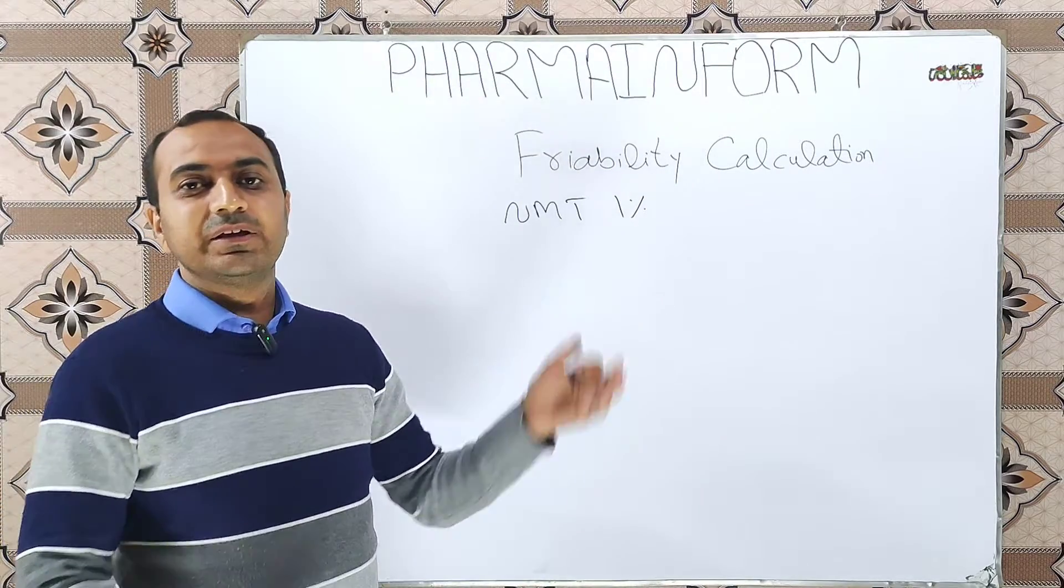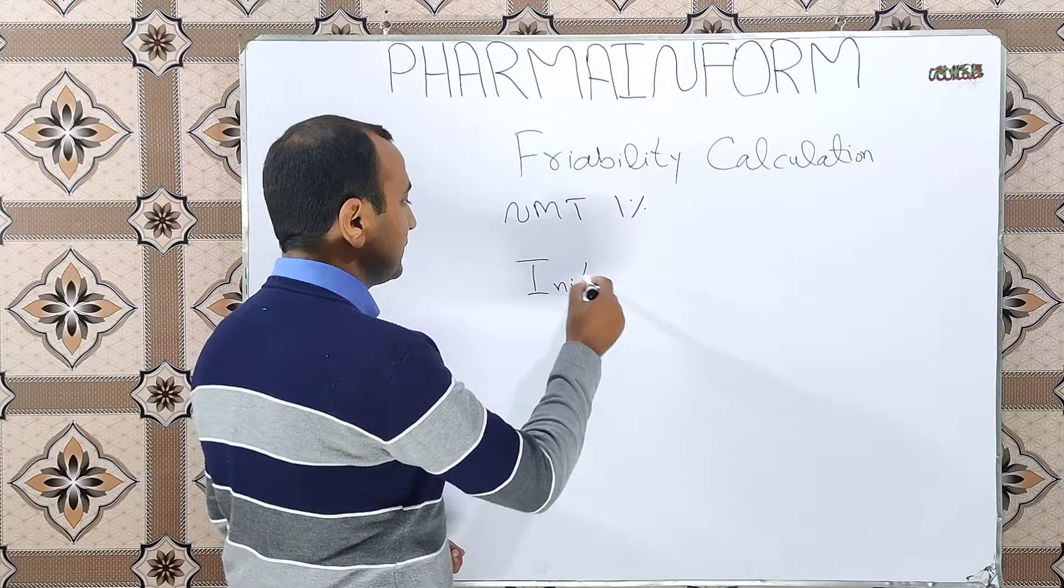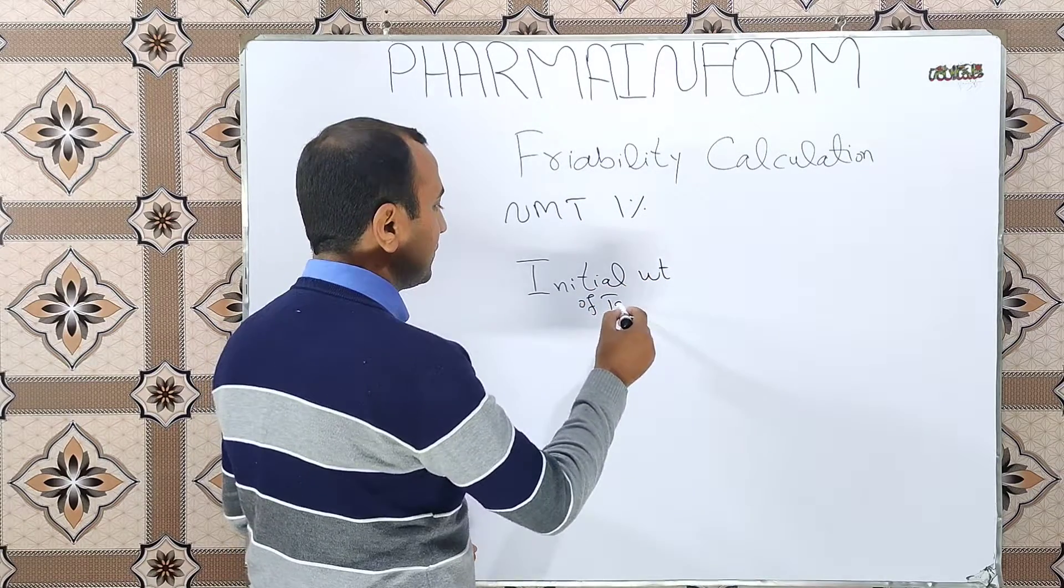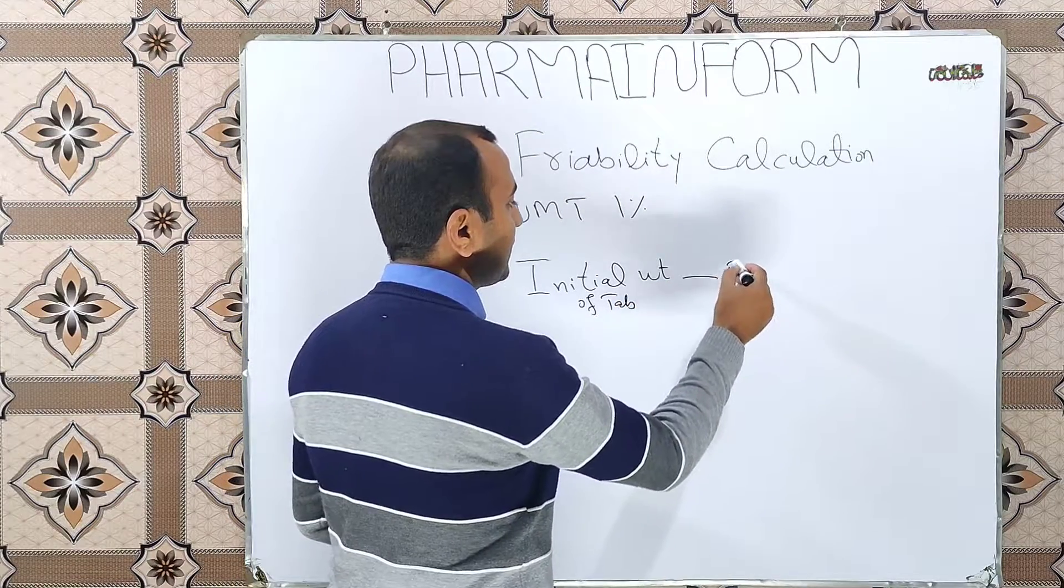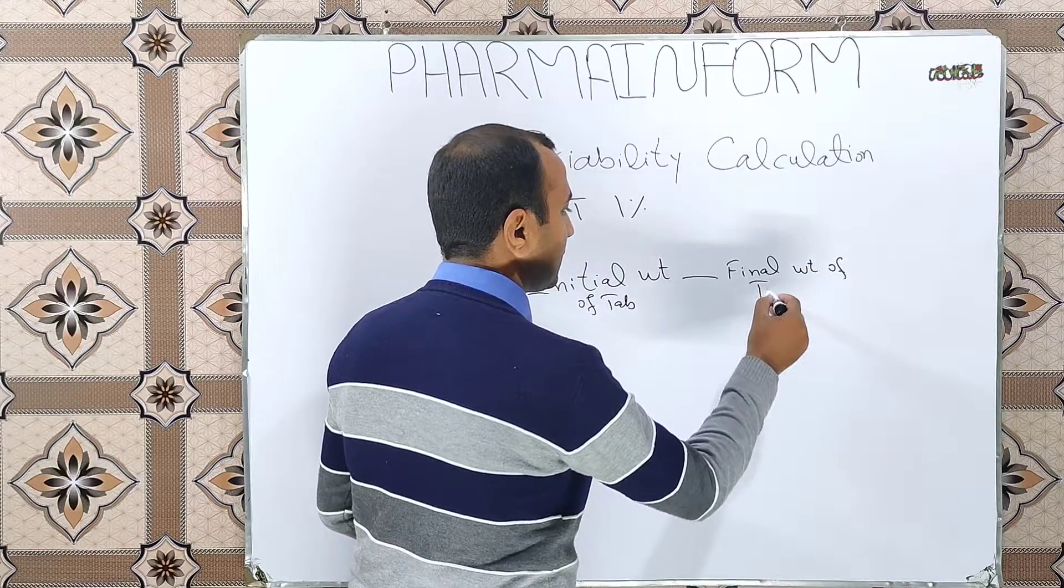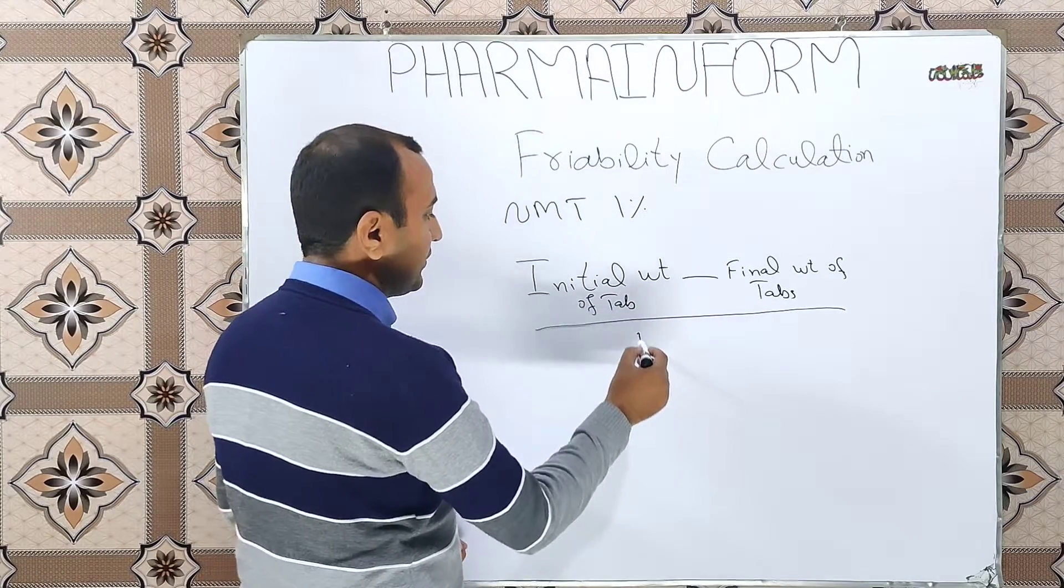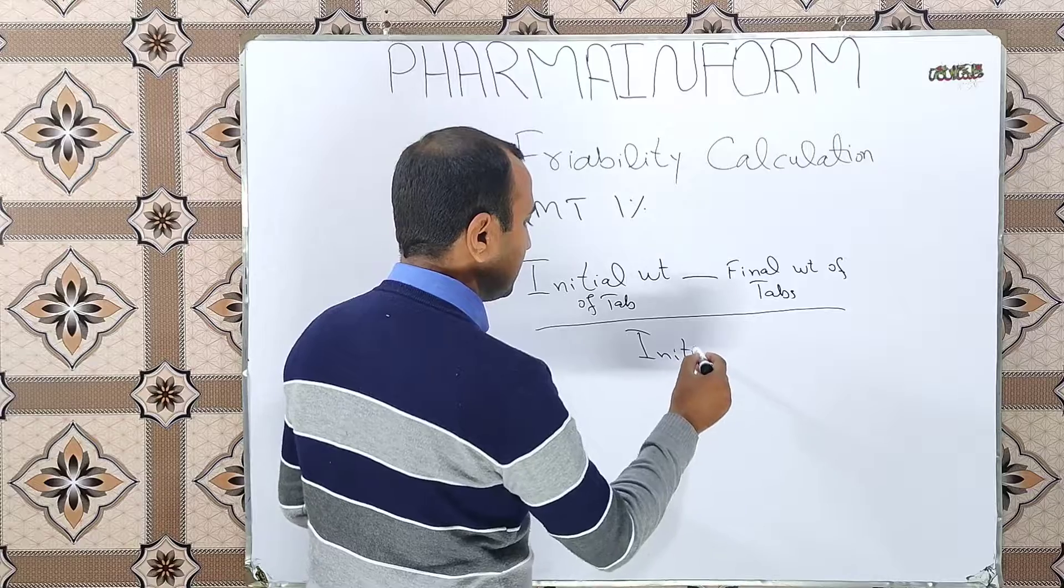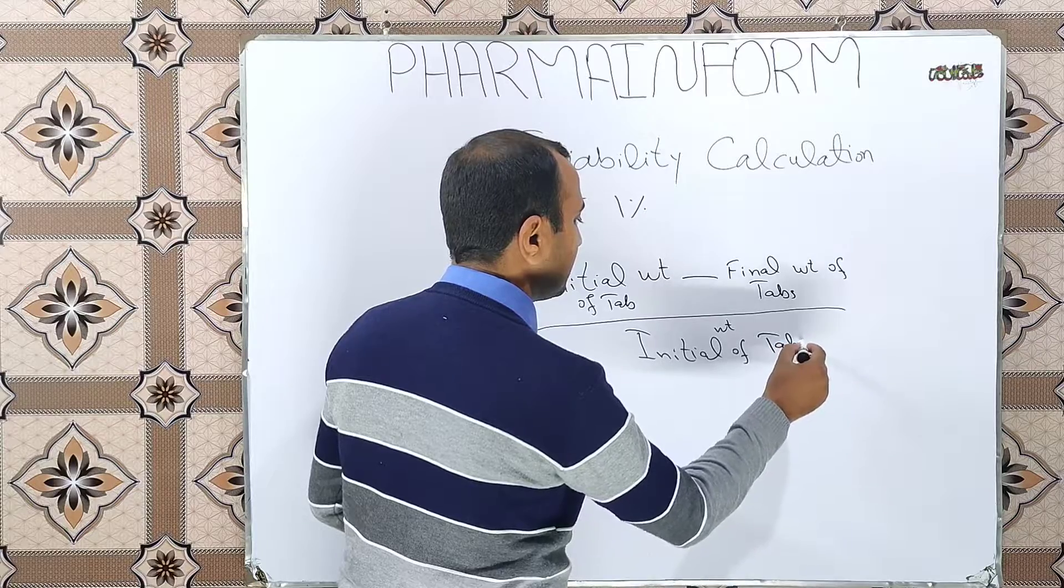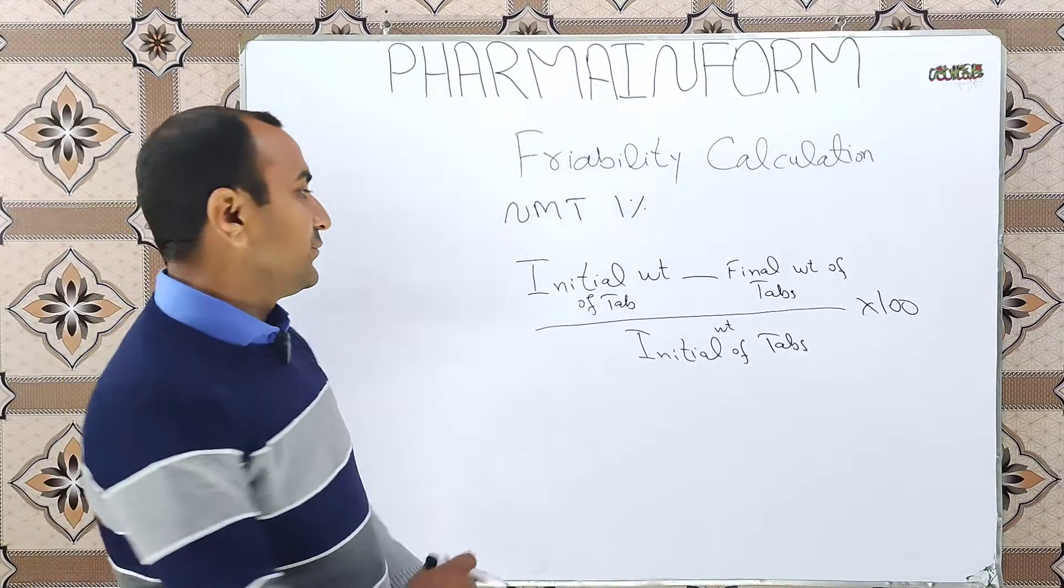To calculate the friability, we use the formula: initial weight of tablets minus final weight of tablets divided by initial weight of tablets and multiply by 100. So this formula is used.